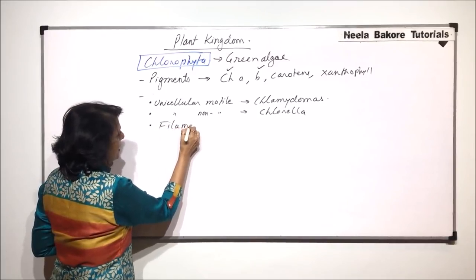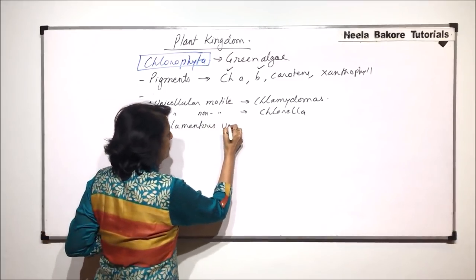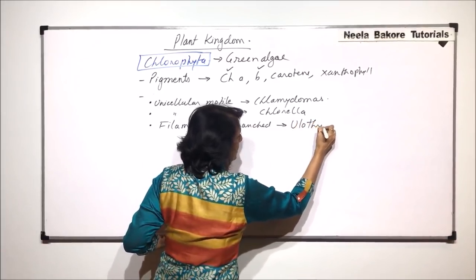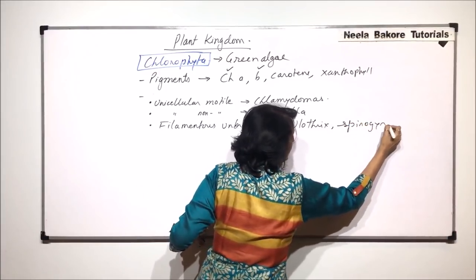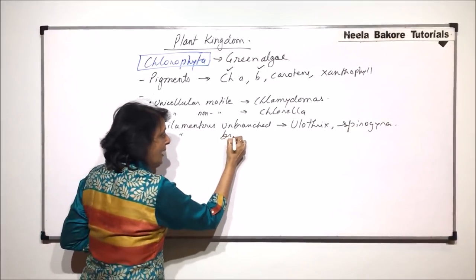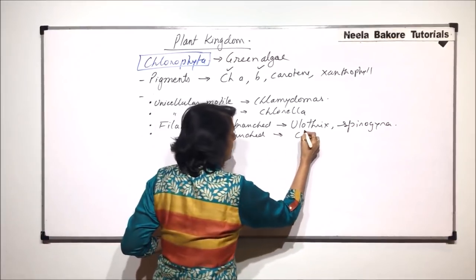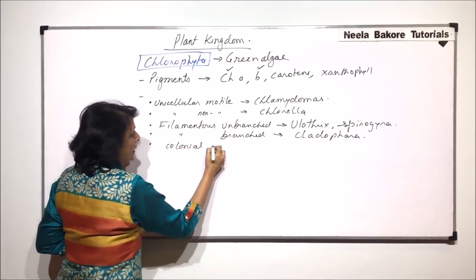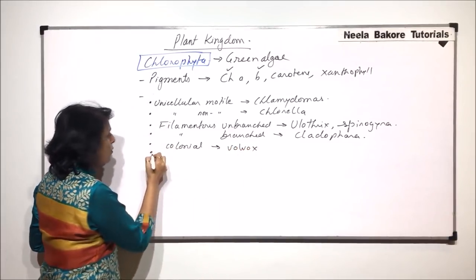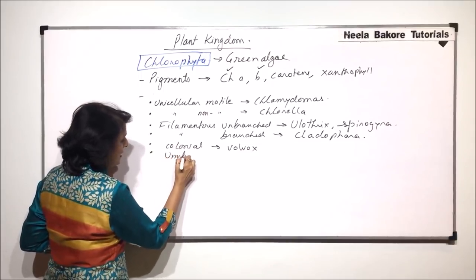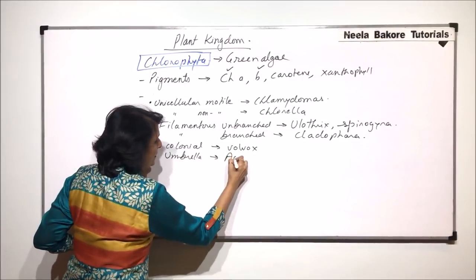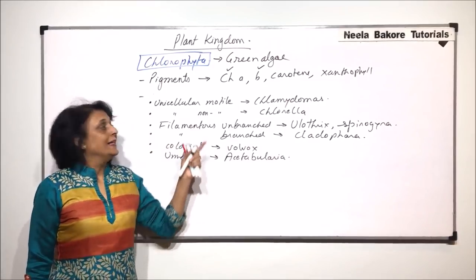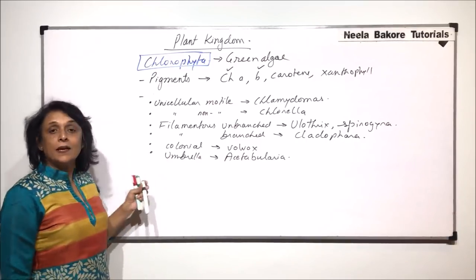They can also be filamentous. Filamentous and unbranched green algae include Ulothrix and Spirogyra. Another type is filamentous and branched, with the example Cladophora. They can also exist in the form of a colony; a colonial example would be Volvox. There is one more shape, which is umbrella-like, and the example is Acetabularia. These various forms give us an idea that they exist in a wide variety.